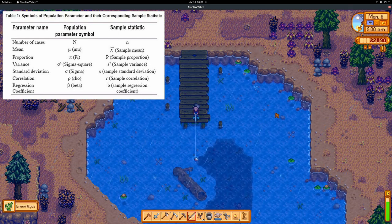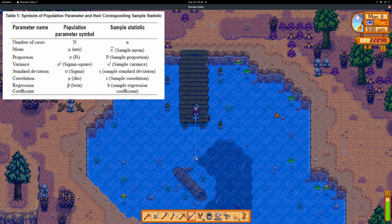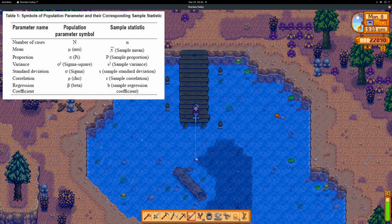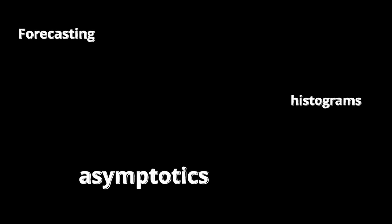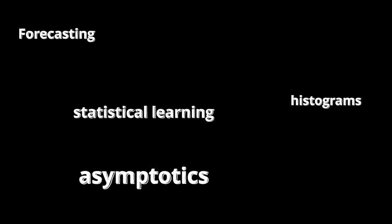Now you may say, this is a fun fishing example, but not all of statistics has to do with samples and populations. What about things like forecasting, data visualization using histograms, hypothesis testing, or asymptotics and statistical learning? I'm going to show how some of these fields are areas of statistics, and I'm also going to make a profound argument that applies to all of science at the end of the video. The spoiler is that all scientific areas of inquiry involve fishers.